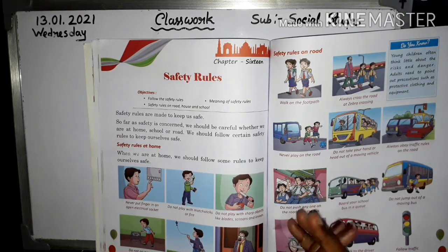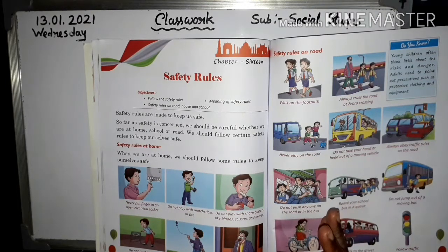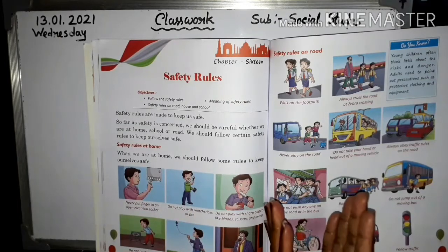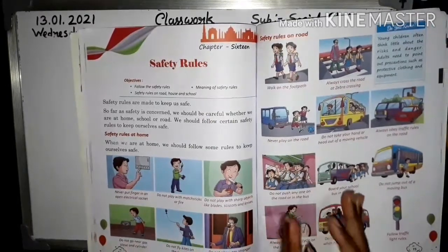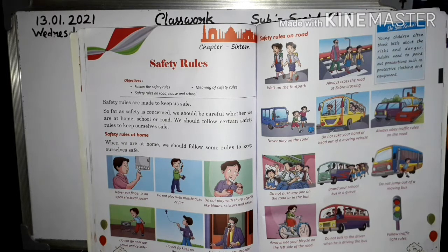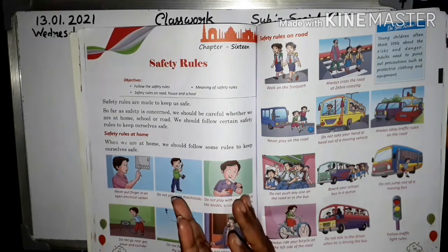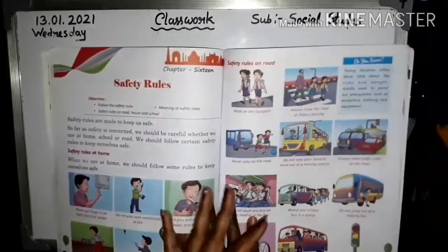Never put your finger in an open electrical socket. Do not play with matchsticks or fire. Do not play with sharp objects like blades, scissors, and knives. Do not go near gas, stoves, and cylinder. Do not fly kites on the terrace. Do not allow any stranger in home — it's very important for safety rules at home.